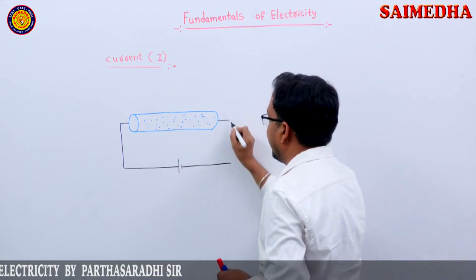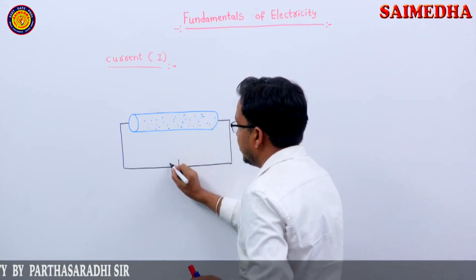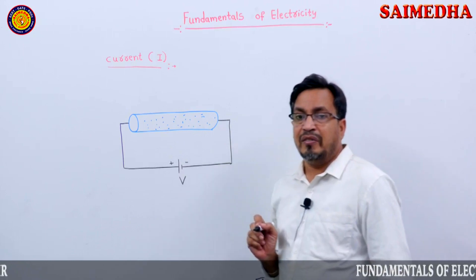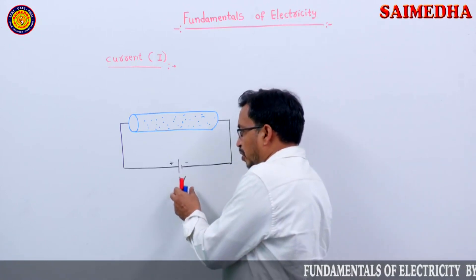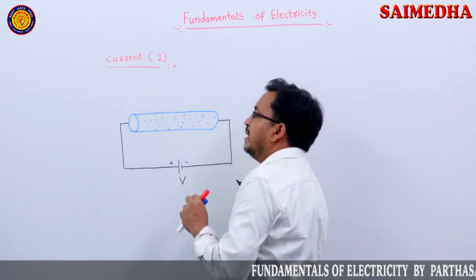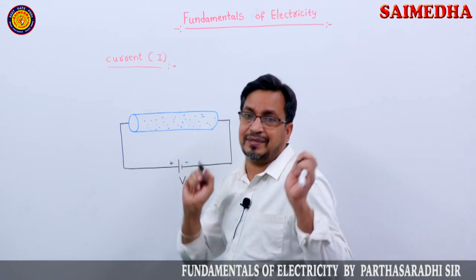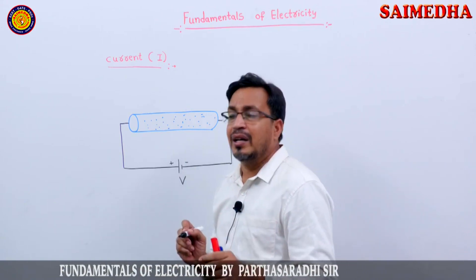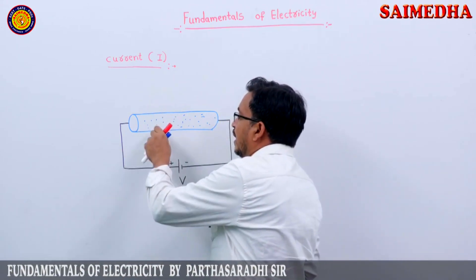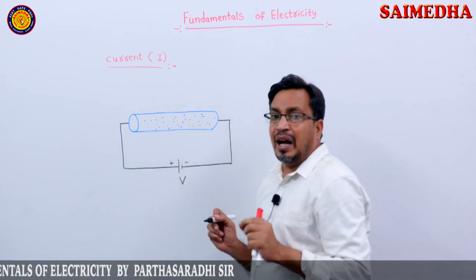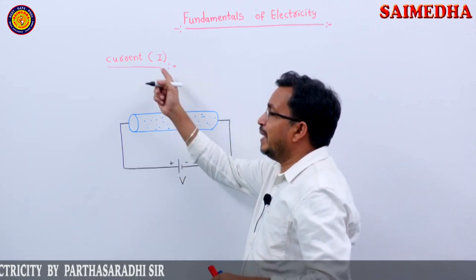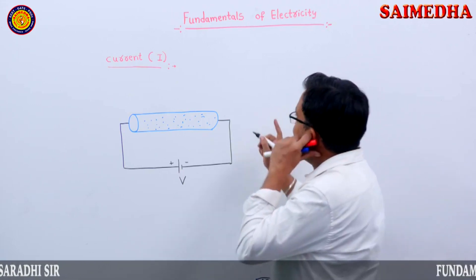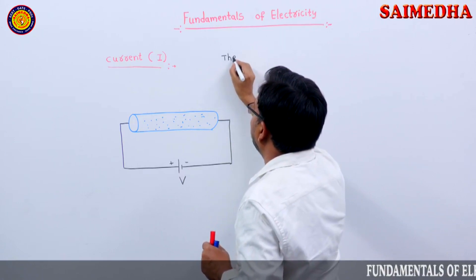I am applying a source V. When we applied a source to this conductor, what happens? The charged particles are moving. If a source is applied to the conductor, the charged particles are moving. The flow of charged particles is current.